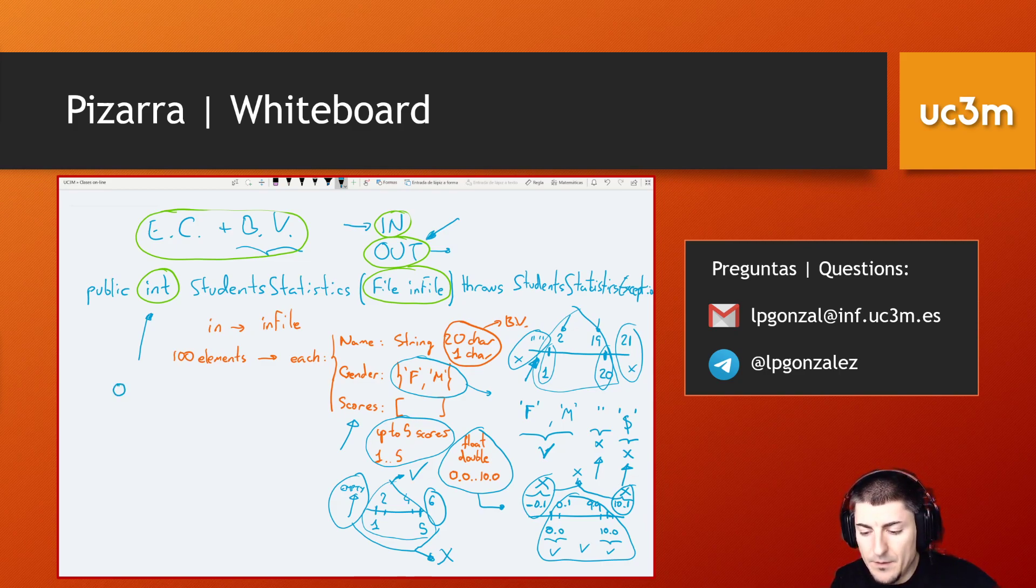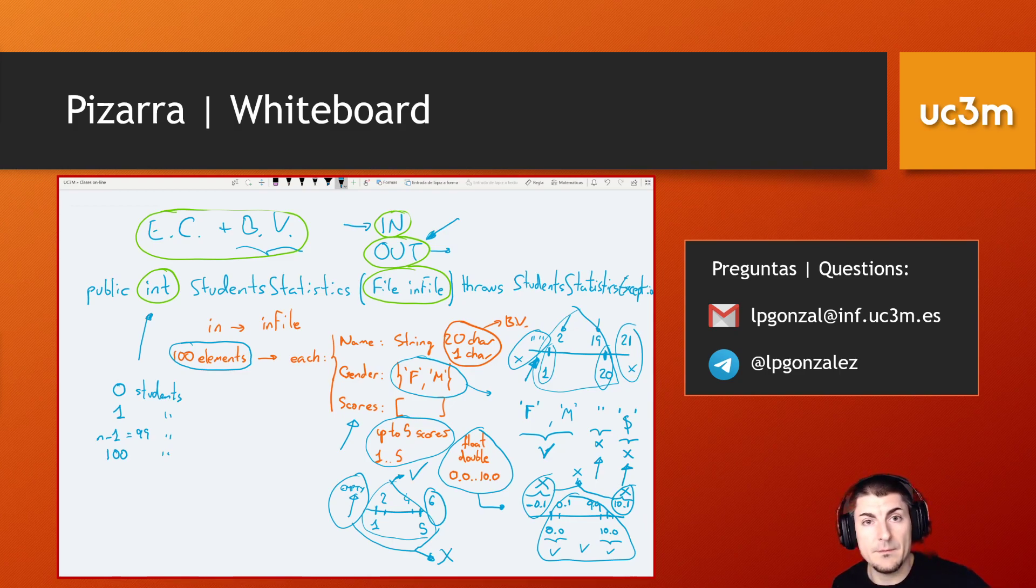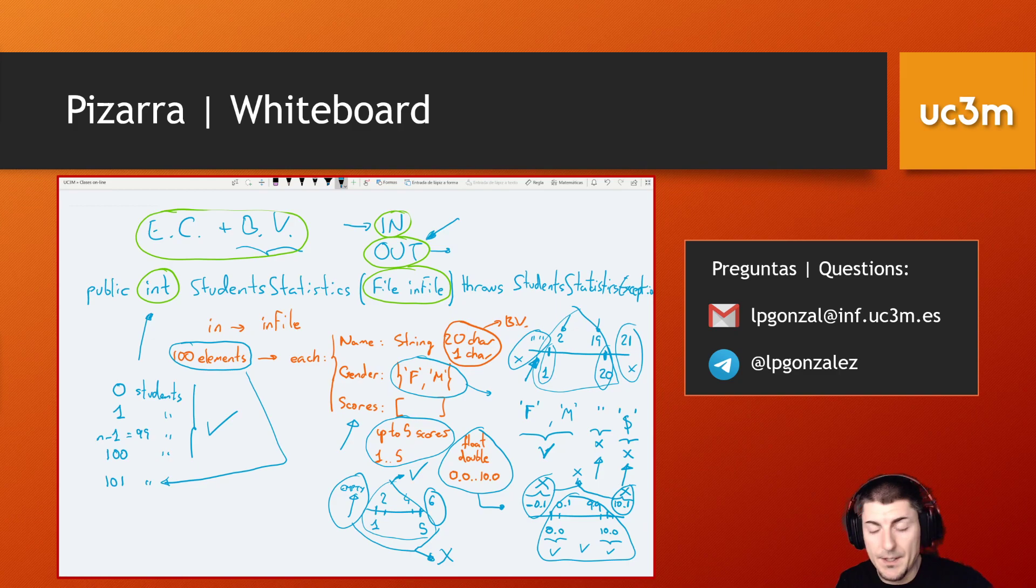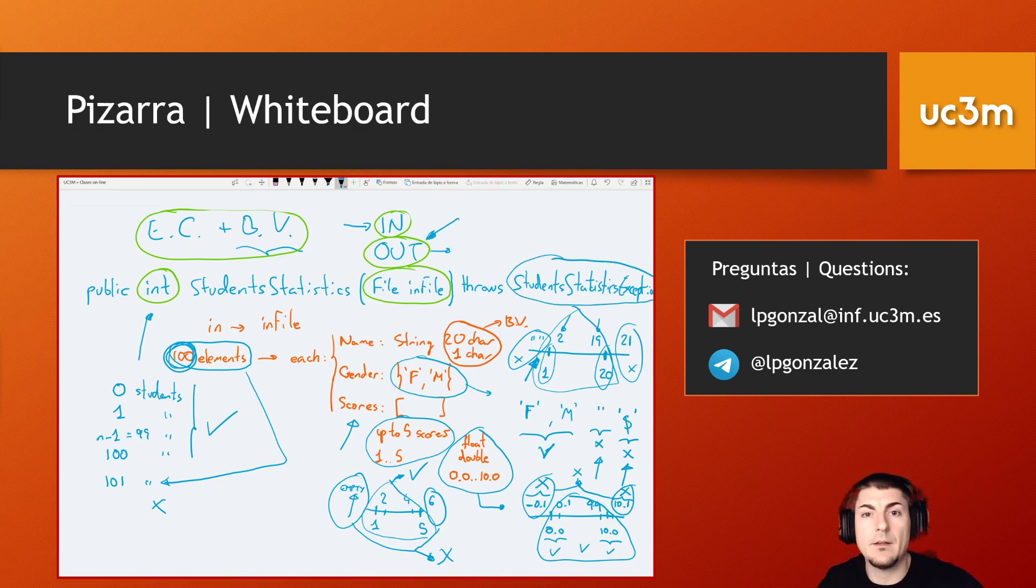In this case, we should create configurations in order to get zero students that passed the subject, one student, n minus 1, given that the upper limit is 100, this should be 99 students, and the final element, 100 students. What else? We can check all of them will be valid. We can try to have 101 students in the file, but in this case, internally the function should check that you are not inputting more than 100 elements, so they should also return an error in the form of student statistic exception.